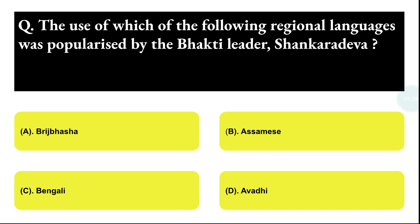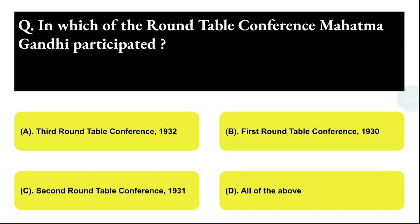Next question: the use of which of the following regional languages was popularized by the Bhakti leader Shankar Deva? Option A: Brijabhasa, Option B: Assamese, Option C: Bengali, Option D: Avati. The correct answer is option B, that is Assamese.